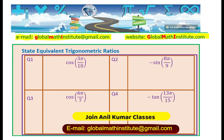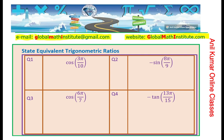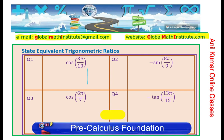Let's take the very first question, which is cos(3π/10). We need to state the equivalent ratio. How do we do that? Well, let's try to figure out cos(3π/10), where will it be on a coordinate plane.